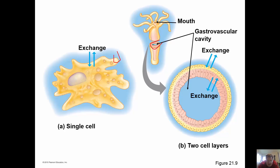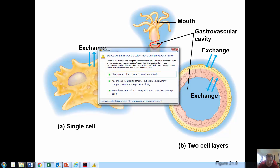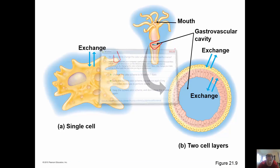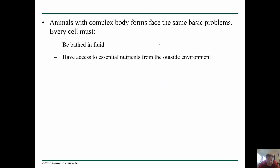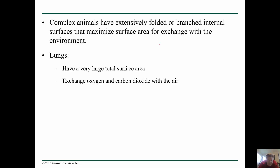Food is not always going to be there, so organisms that capture and digest their food have what is called a gastrovascular cavity where they bring the food in, digest it, and get rid of waste. Another challenge is that we are almost always bathed in fluid and we have to exchange that fluid.